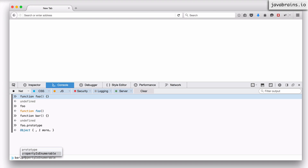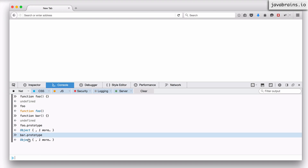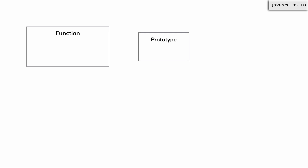Similarly, I can do bar.prototype, and that points to the prototype object for bar. To draw a diagram: every time you create a function, the JavaScript engine creates a function object and also creates a prototype object. You can access the function object by its name, but to access the prototype object, you use a property of the function — because the JavaScript engine sets a property on the function object called prototype, and that property points to the prototype object. To access the prototype of any function, you say functionName.prototype.